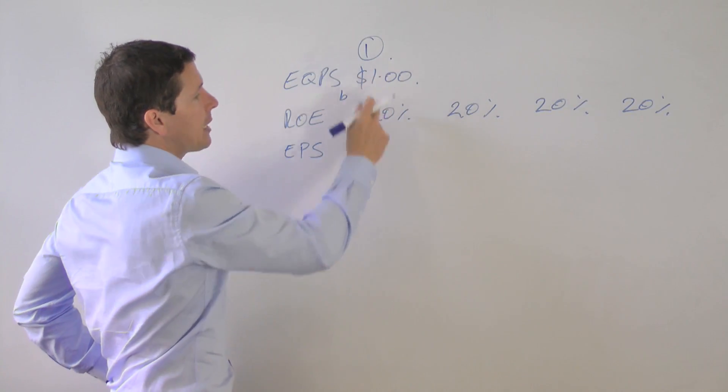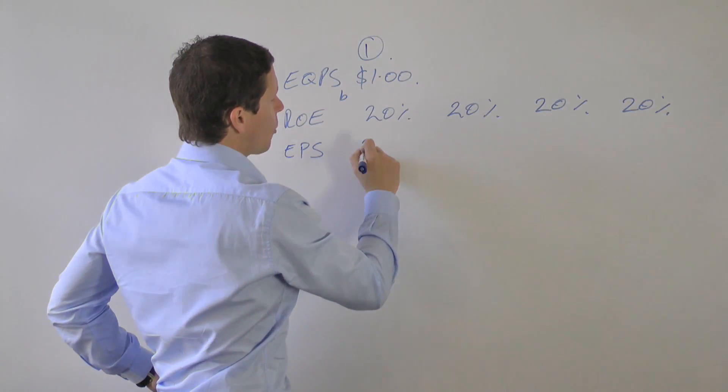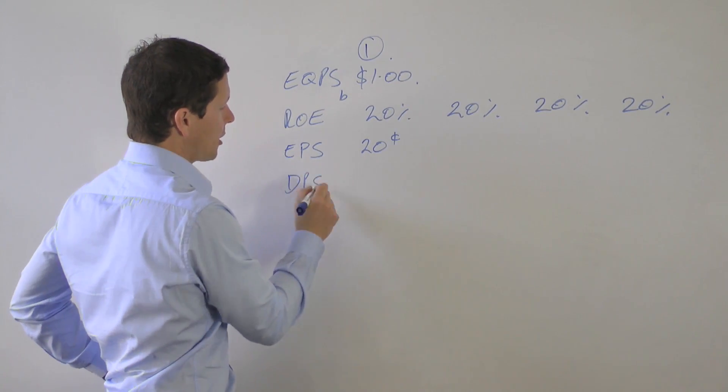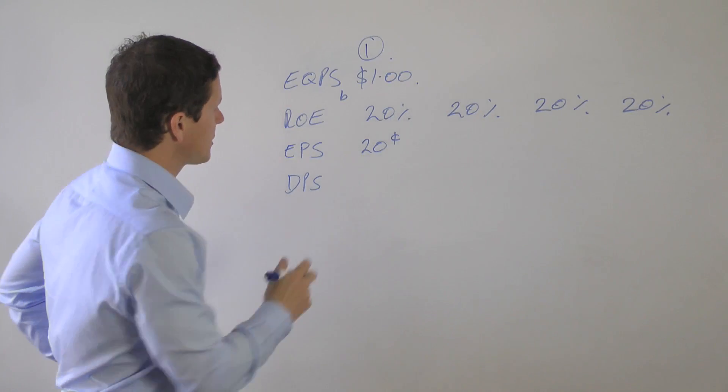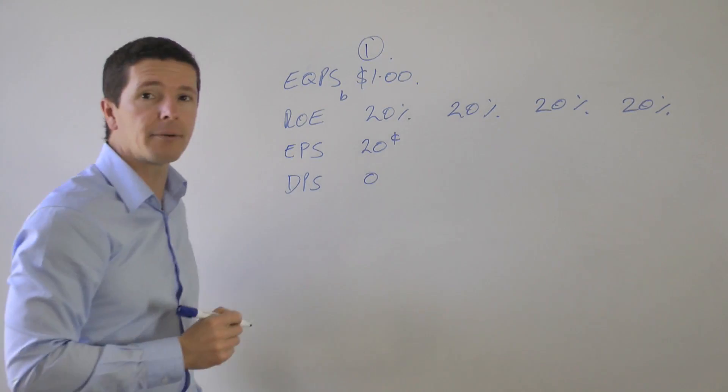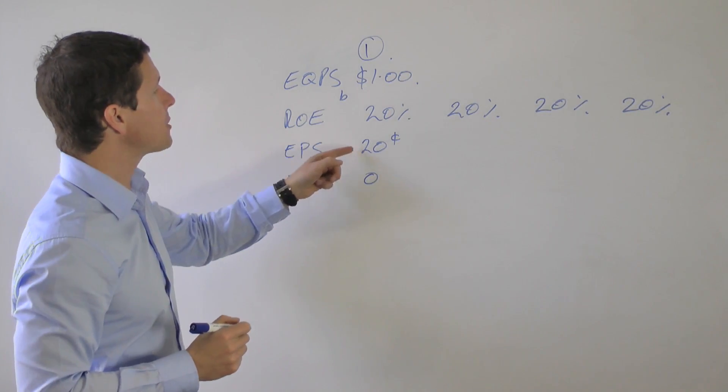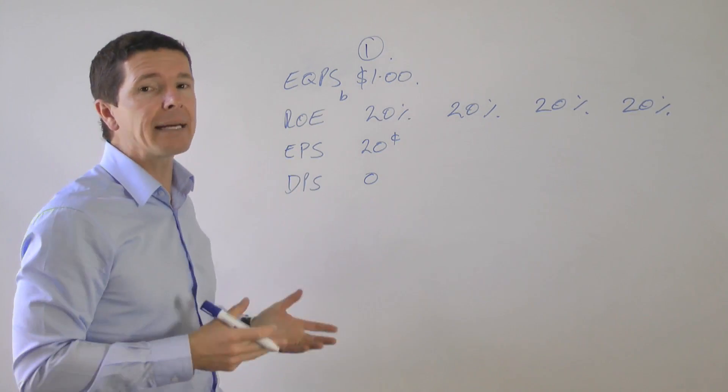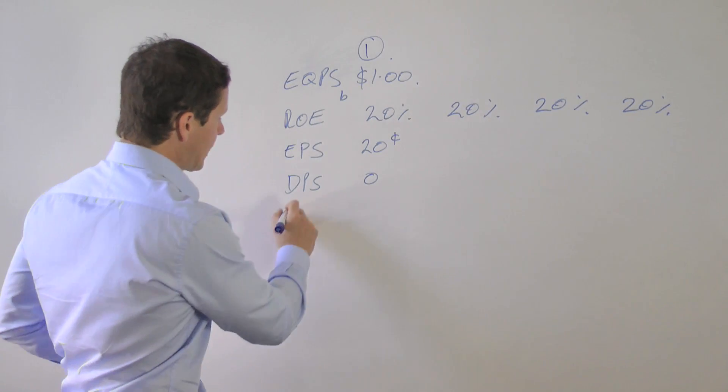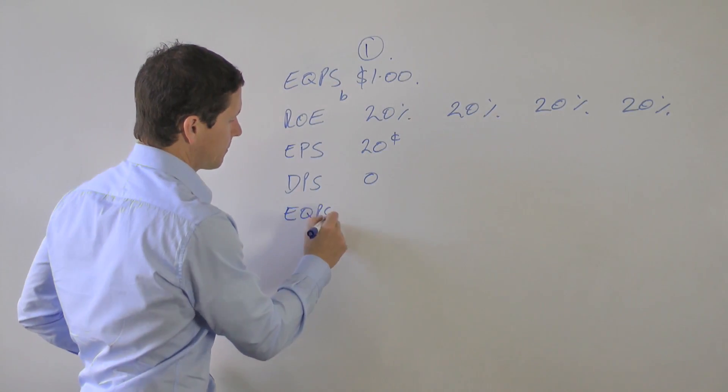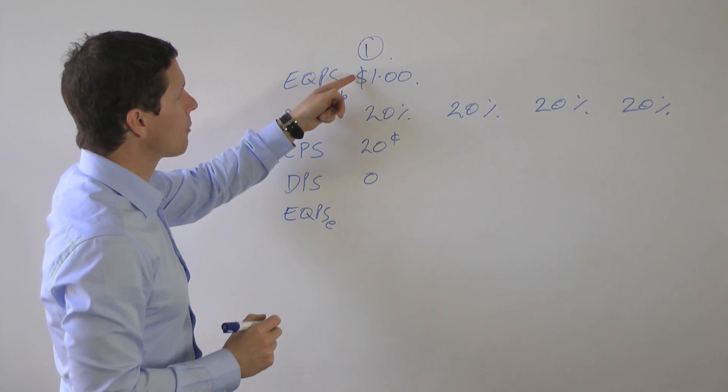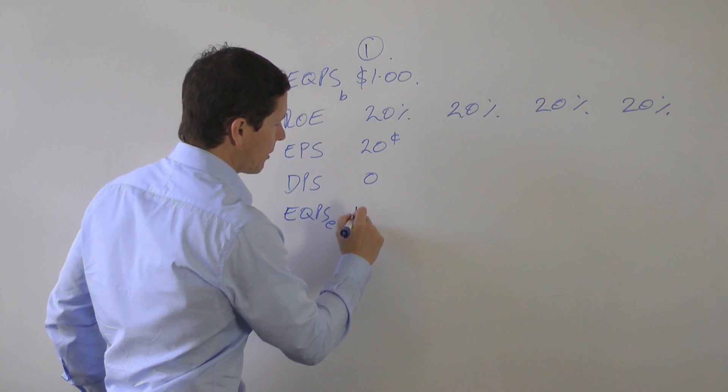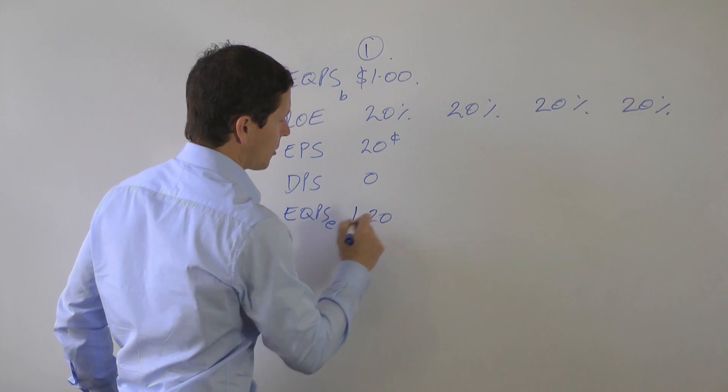So in the first year the company generates 20 cents of earnings per share. Because the payout ratio is zero, dividends per share is zero. All of those profits are retained in the company. They build up the bank account and so the equity at the end of the year is equal to the dollar at the beginning plus the 20 cents earned. So the equity at the end is $1.20.